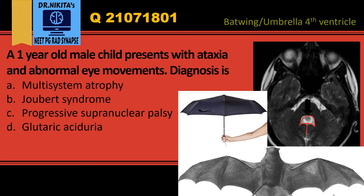We get this batwing or umbrella-shaped fourth ventricle because in this region the cerebellar vermis is absent. The vermis, which connects the two cerebellar hemispheres, is absent — and this is a feature of Joubert syndrome. So a batwing or umbrella-shaped fourth ventricle is a feature of Joubert syndrome due to an absent or hypoplastic cerebellar vermis.